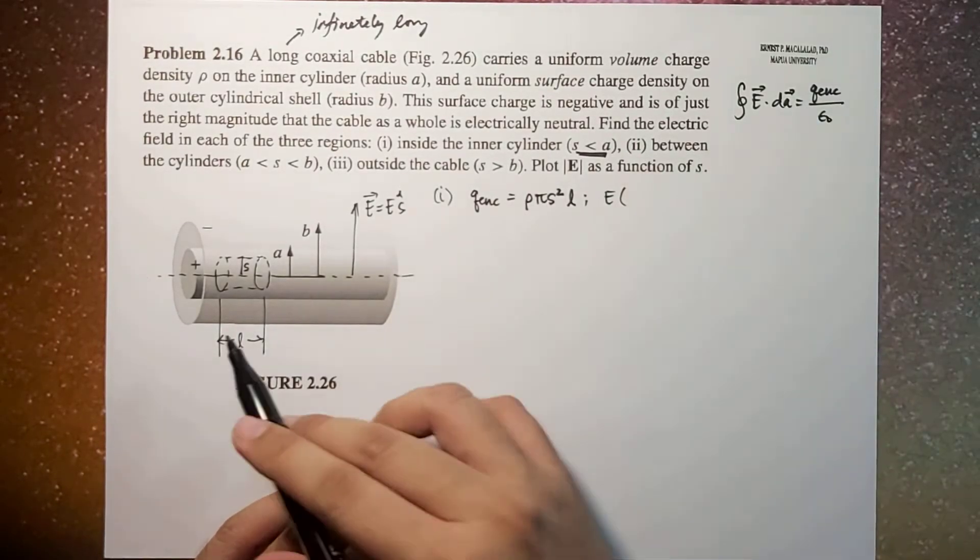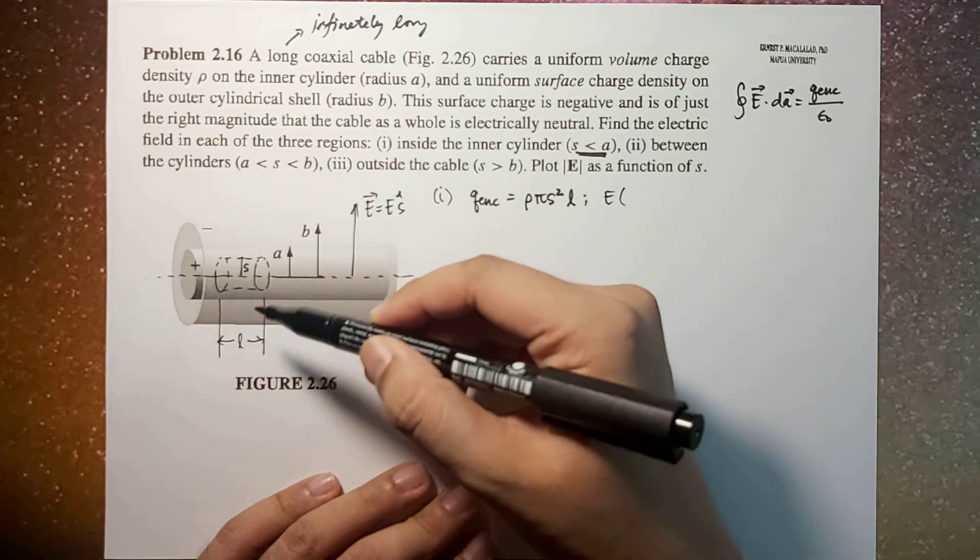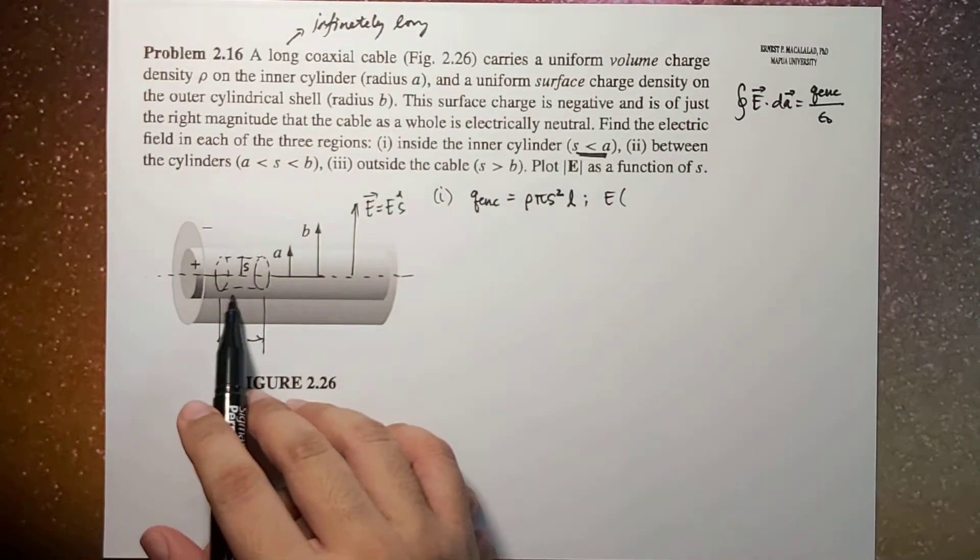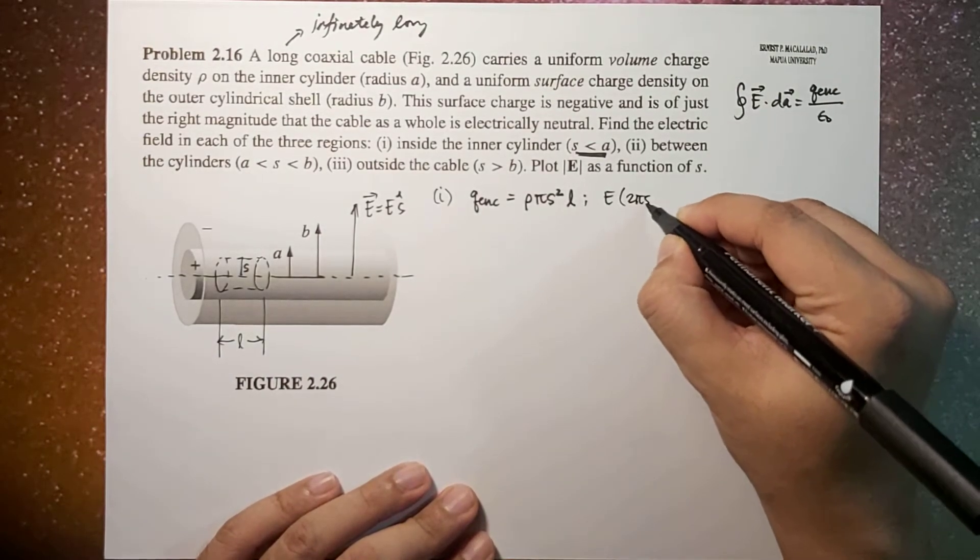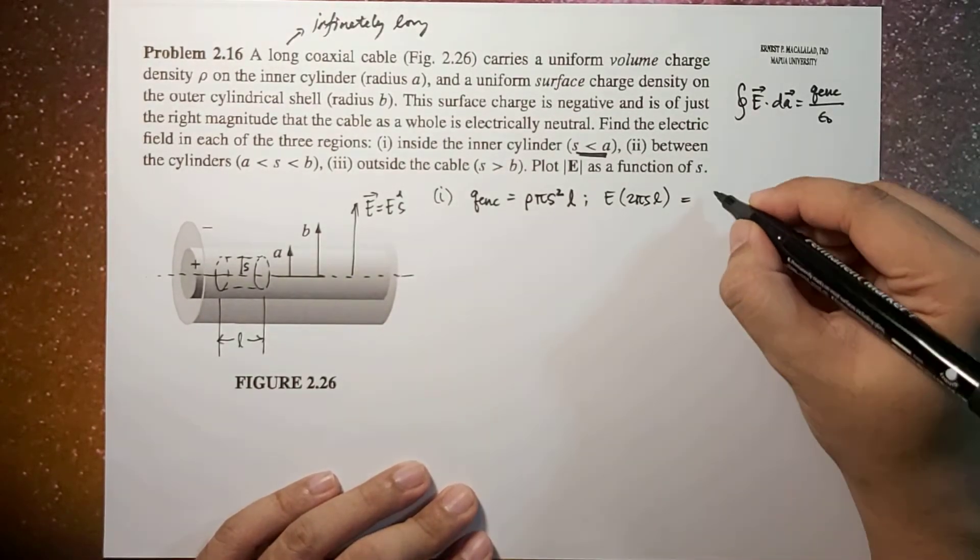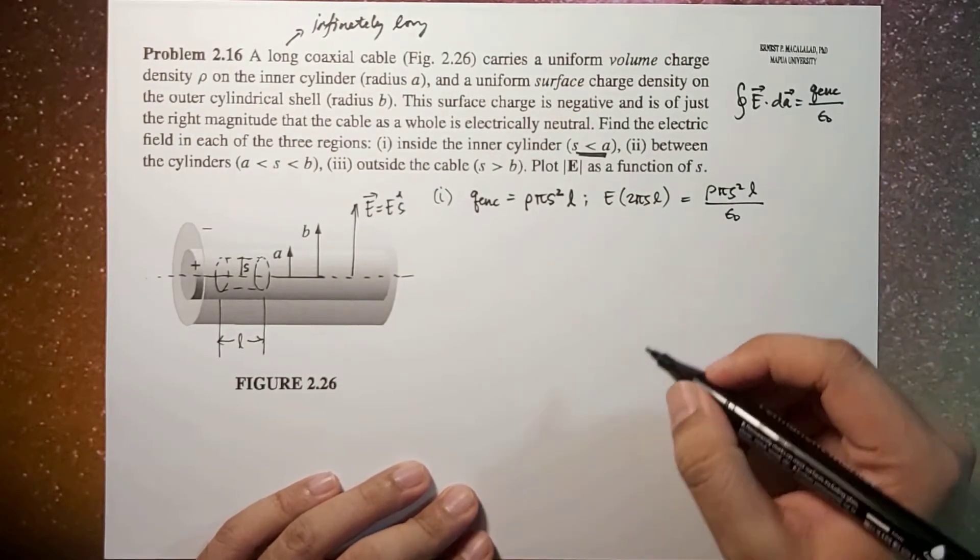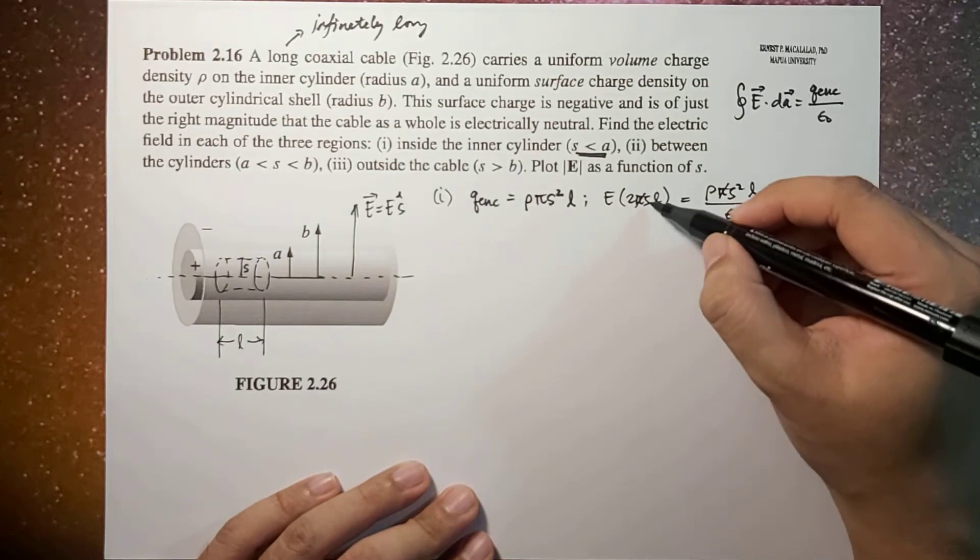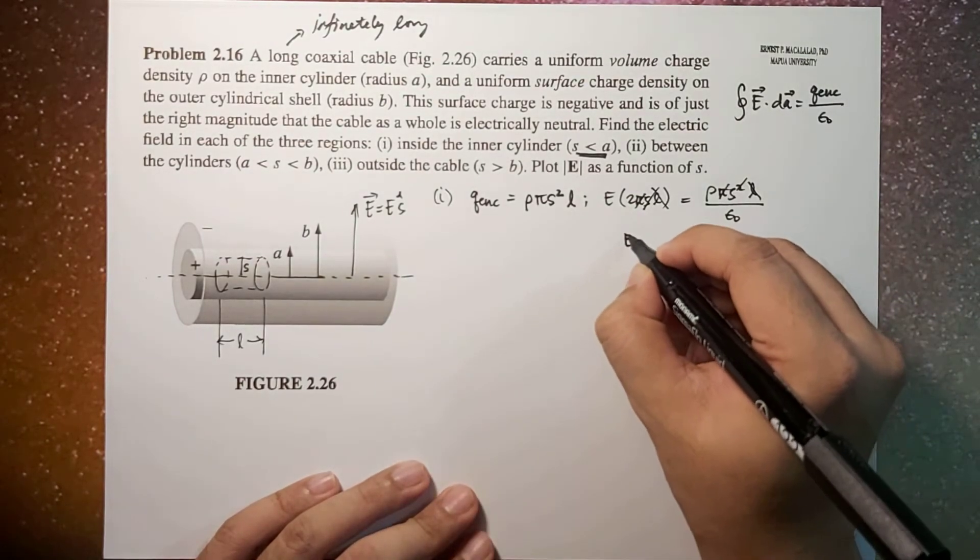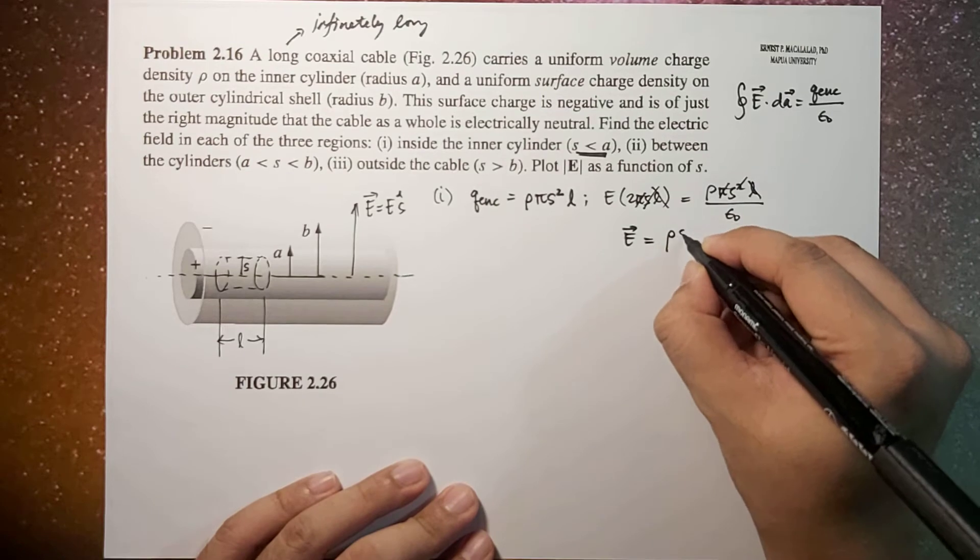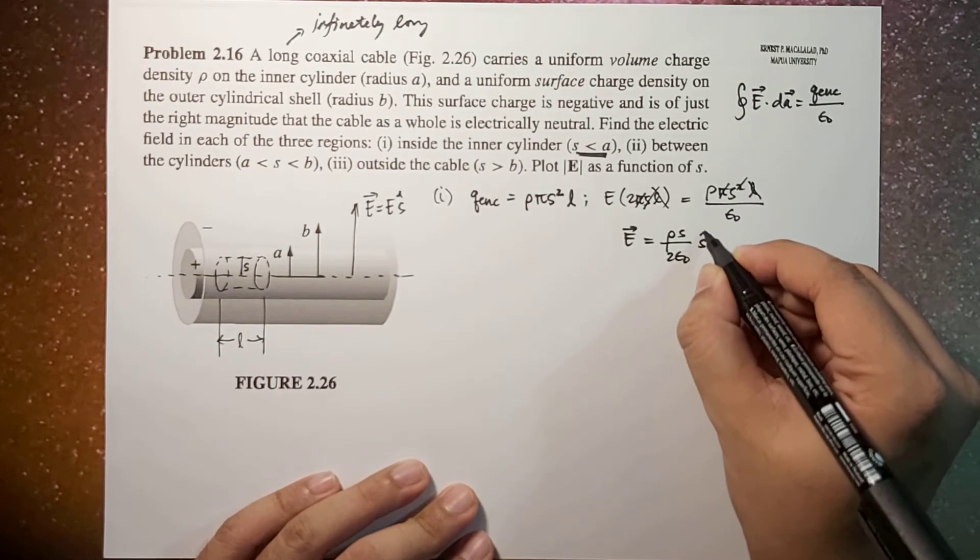In other words, the area would be the lateral area, which is the perimeter of the circular base times the length or height of your cylindrical Gaussian surface. So this is 2πSL, and this is equal to Q enclosed, that's ρπS²L, divided by ε₀. So π will cancel, one of the S's will cancel, L will cancel. Therefore, the electric field will now be equal to ρS over 2ε₀ S hat.